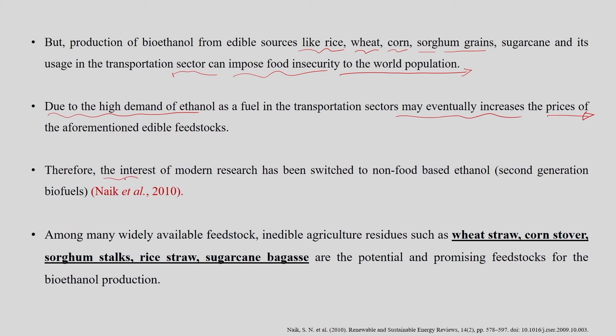As a result, the interest of modern research has shifted to non-food-grade feedstock material, termed second-generation biofuel. Non-food feedstocks include lignocellulosic materials or agriculture residues such as wheat straw, corn stover, sorghum stalks, rice straw, and sugarcane bagasse. These materials are widely available and are currently used only as animal feed or domestic fuel for heating, with most being disposed of as waste.